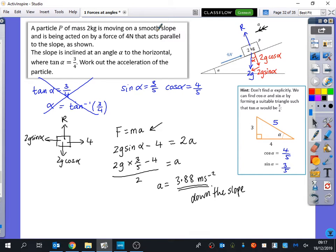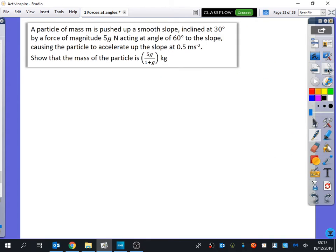We're going to do one more example on the next page. This one's different because we've got no diagram that's been drawn, so we need to think about what the diagram is. It says a particle of mass m kilograms is pushed up a smooth slope inclined at 30 degrees by a force of magnitude 5g newtons, acting at an angle of 60 degrees to the slope, causing the particle to accelerate up the slope at 0.5 metres per second squared. Show that the mass of the particle is 5g over 1 plus g kilograms. Because you notice that g is in the answer, at no point should you use 9.8. You should leave everything as g.